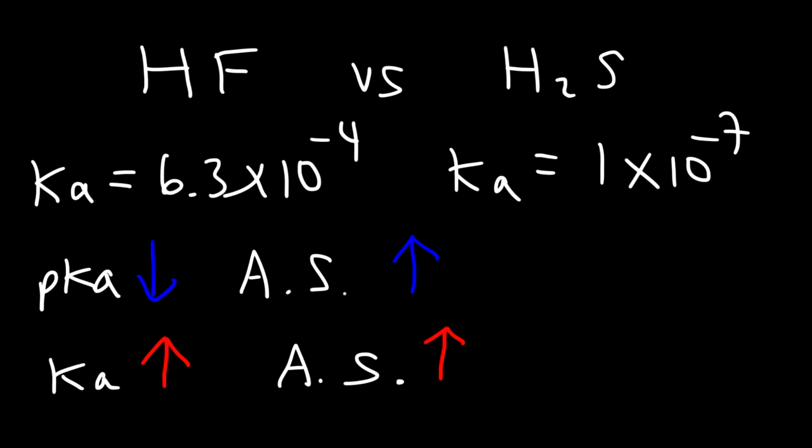So which number is higher? 10 to the negative 4 or 10 to the minus 7? 10 to the negative 4 is greater than 10 to the negative 7. So therefore, HF is the stronger acid.